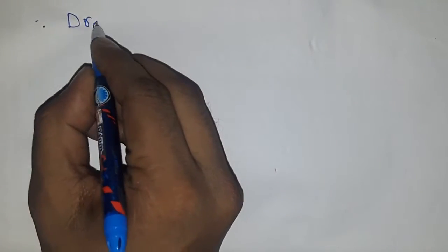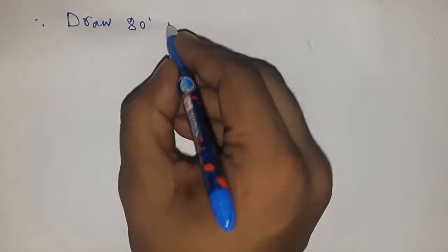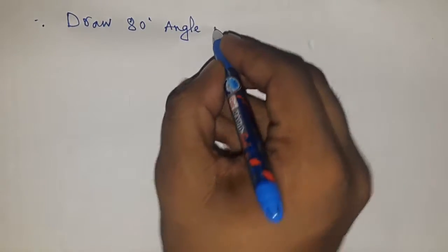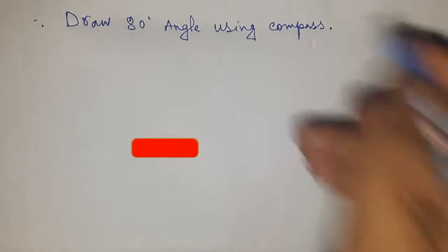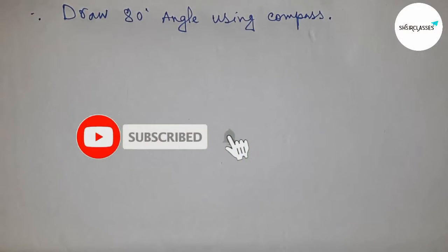Hello students, welcome to ASISTER Classes. Today we're talking about the construction of an 80-degree angle using a compass. Before starting the video, I have one request: please subscribe to the channel and press the bell icon for future video notifications.